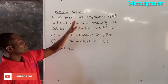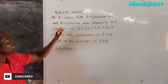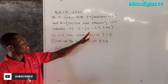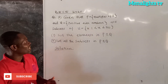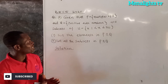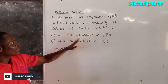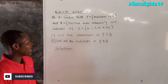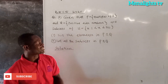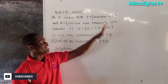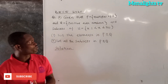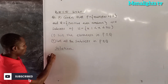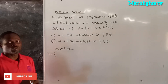Question: given that P is equal to multiples of 3, and Q is equal to positive even numbers. They are subsets of the universal set X, such that 1 is less than X which is less than or equal to 20. We have to list the members of P intersection Q and then list all the subsets of Q. First, we list the members of the universal set. Since 1 is less than X ≤ 20, X is greater than 1, so the universal set starts from 2 to 20.